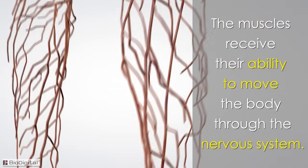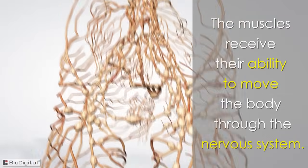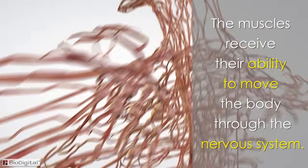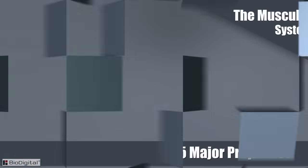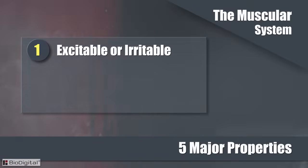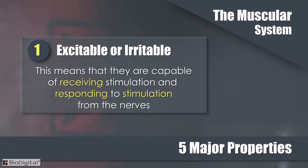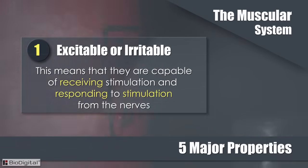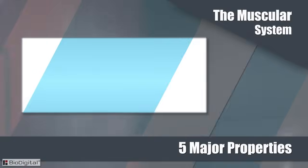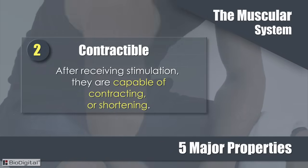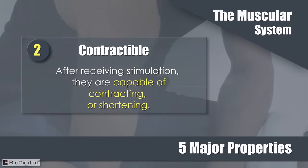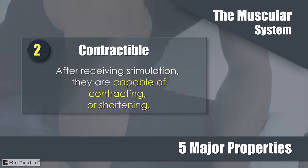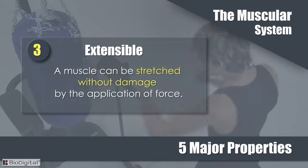Muscles receive their ability to move through the nervous system. There are five major properties of the muscular system. Number one: muscles are excitable or irritable, meaning they are capable of receiving and responding to stimulation from the nerves. Number two: they are contractible — after receiving stimulation, they are capable of contracting or shortening.